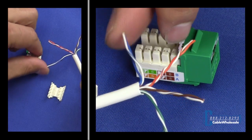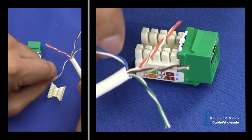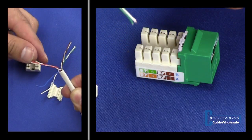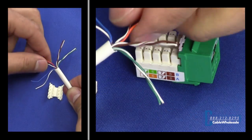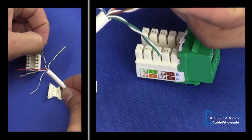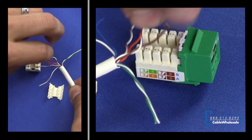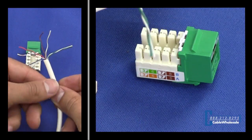And on this particular keystone, all of ours are the same. It will be in the top left will be orange, orange stripe. Bottom left is blue, blue stripe. Top right is brown, brown stripe. Then bottom right is the green and green stripe. Now every keystone out there is a little bit different on how they pin out. So you always want to take a look at the sticker on the side and also always use the industry standard B color coding, which is what we're using here.